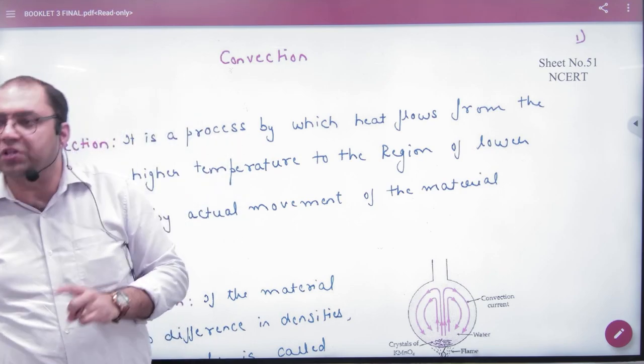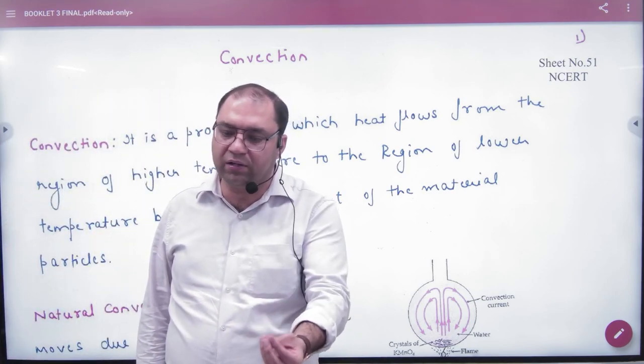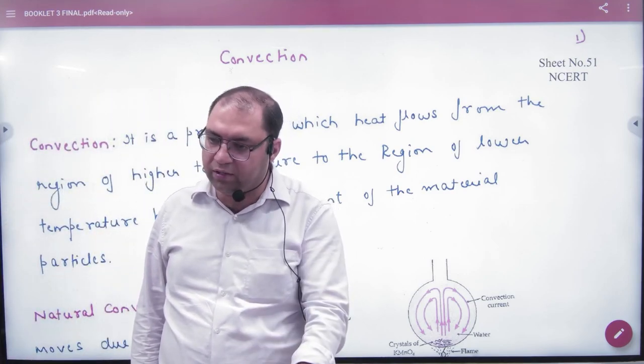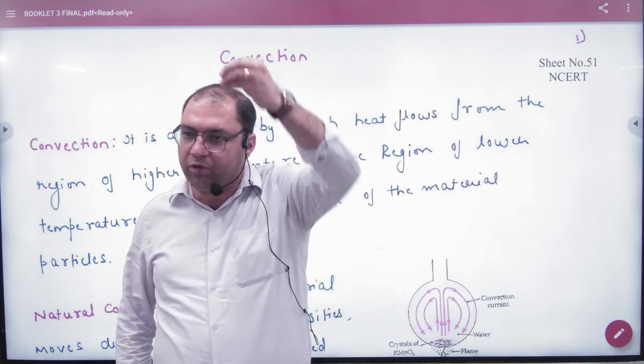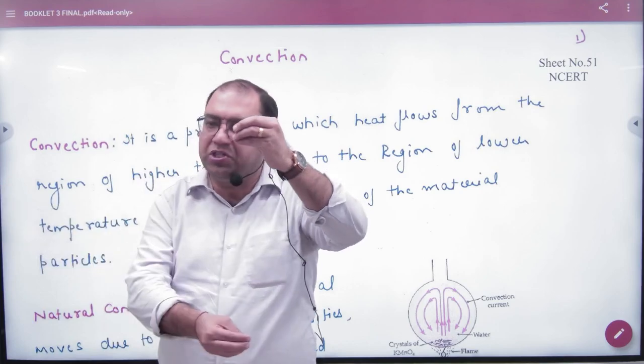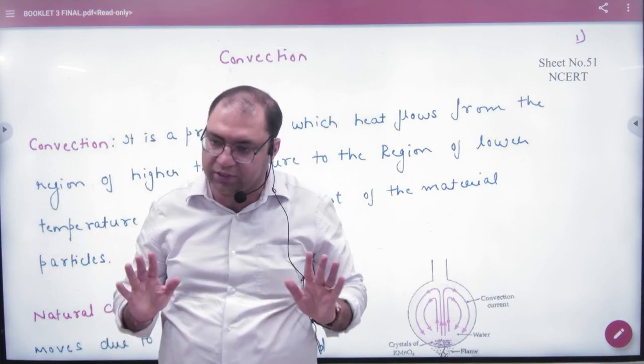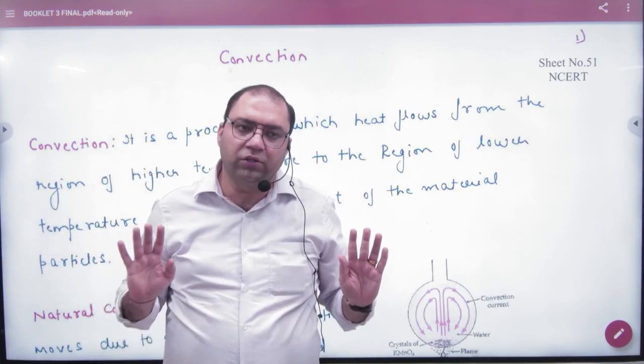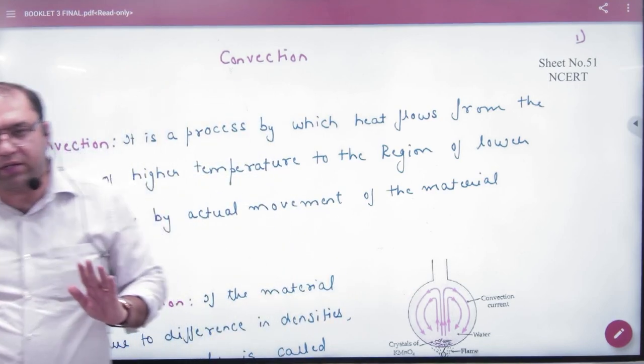Convectional winds occur when water is warm - the warm water molecules rise up, taking heat with them, while cold molecules come down. This starts the wind. There is actual movement of particles in this process.